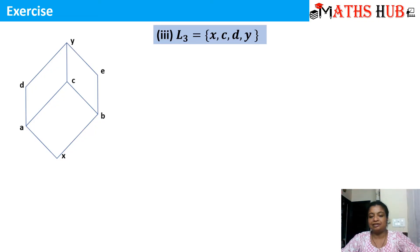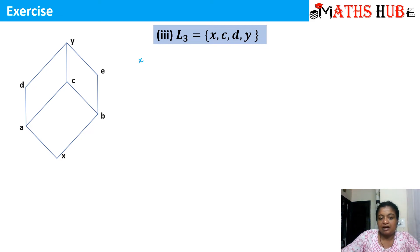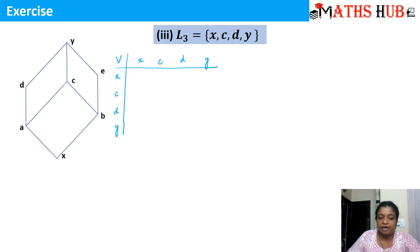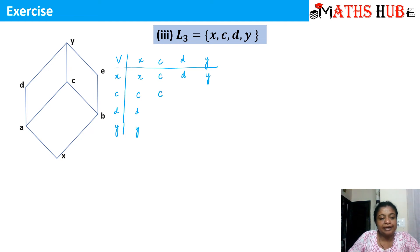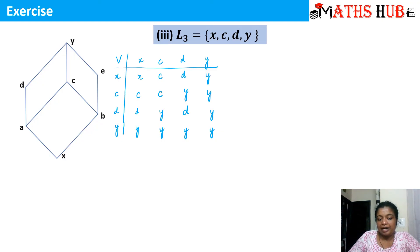The third subset given to us is L3, with elements x, c, d, and y. Let's prepare the join table with x, c, d, y in rows and columns. x join x is x, x join c is c, x join d is d, x join y is y. Then c join c is c, c join d is y, c join y is y. All elements in the join table belong to L3, so the join table is fine.